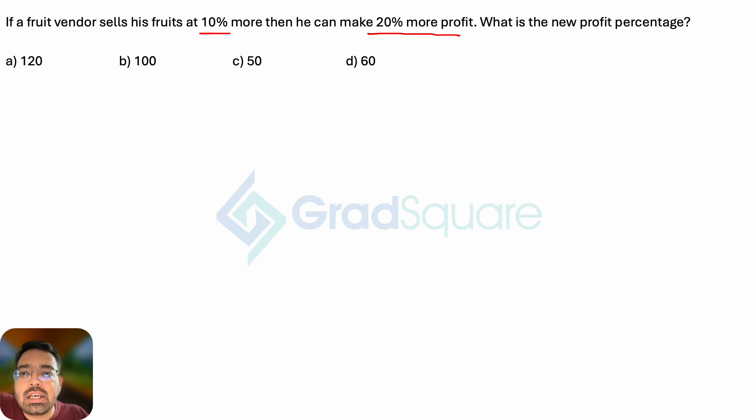Let's say the original cost price of the fruit was x and the selling price was y. So what was the profit? The value of profit must have been y minus x. Now if he is selling at 10% more, then he is selling it at 1.1y.